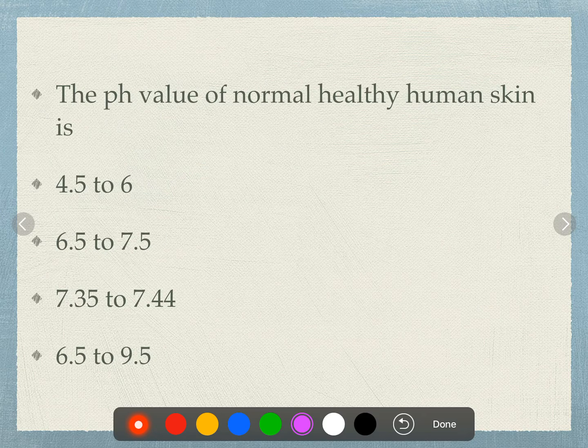The pH value of normal healthy human skin is: 4.5–2.6, 6.5–27.5, 7.35–27.44, or 6.5–29.5? The pH value of healthy skin is 4.5–2.6.